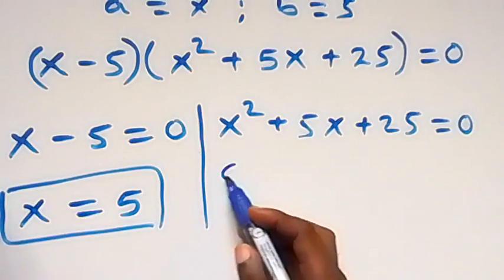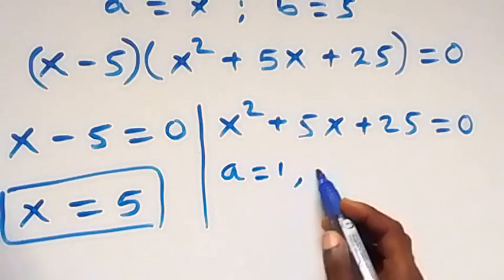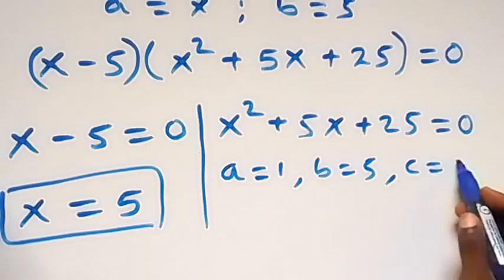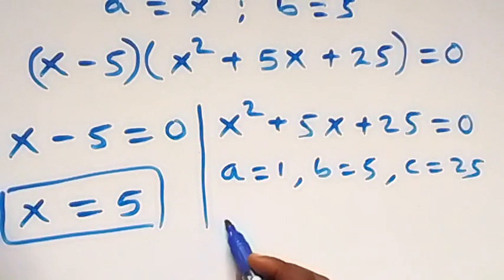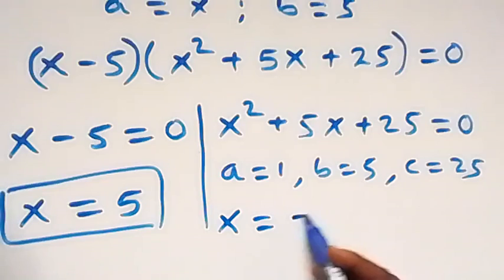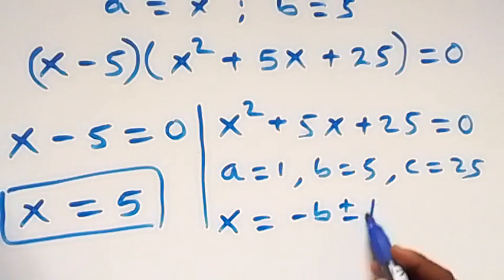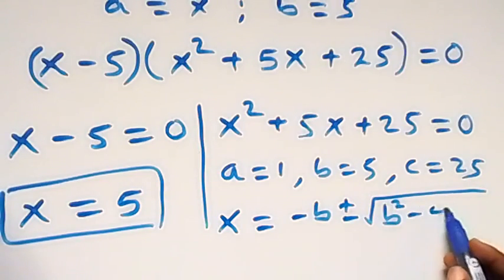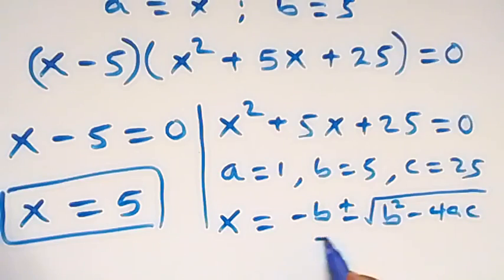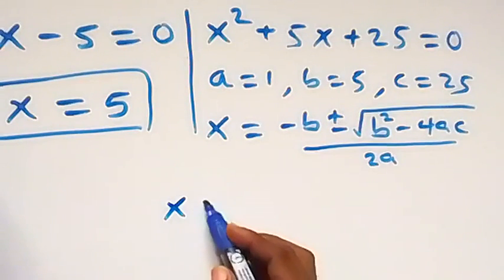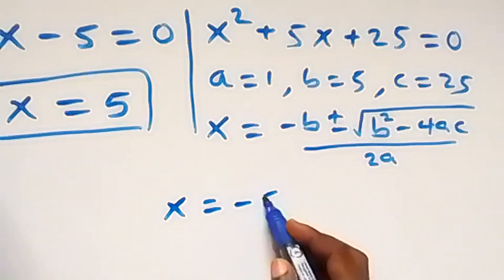Solving this quadratic equation: a is 1, b is 5, and c is 25. From the formula, x equals minus b plus or minus square root of b squared minus 4ac over 2a. Here we have x equals minus 5.